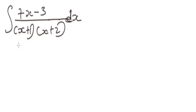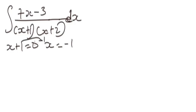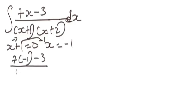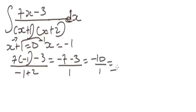This is the shortcut trick. We begin by equating x + 1 to zero, then solving gives x = -1. Now substitute -1 into the numerator expression — but don't substitute it into the factor (x + 1). So we get: 7(-1) - 3 over (-1 + 2), which is -7 - 3 over 1, giving us -10.